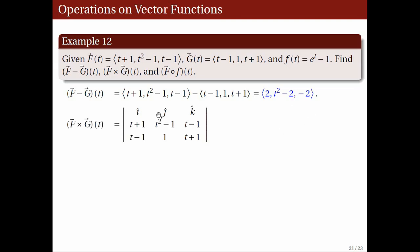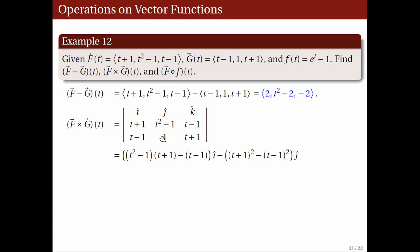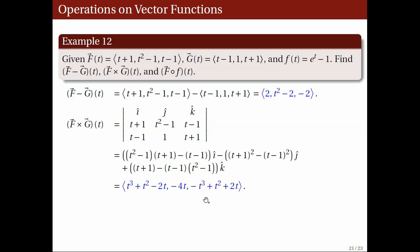For the cross product, the i-hat component is (t squared minus 1)(t plus 1) minus (t plus 1 minus t minus 1)(t minus 1). The j-hat component is the negative of (t plus 1 minus t minus 1) minus (t minus 1), and the k-hat component is (t plus 1)(1) minus (t minus 1)(t squared minus 1). Carrying out the computations, the i-hat component is t cubed plus t squared minus 2t, the j-hat component is negative 4t, and the k-hat component is negative t cubed plus t squared plus 2t.